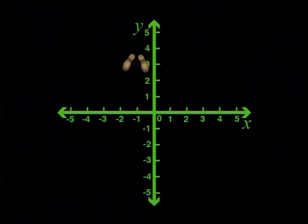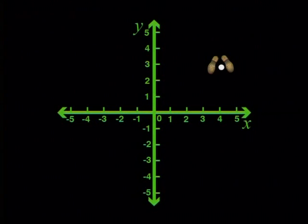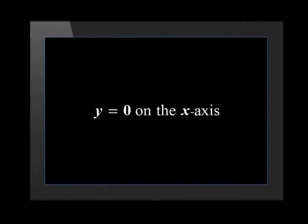That was really good! Do you think you could find a point when I give you its coordinates? I can give it a go. What are the coordinates? Let's try an interesting one. What about (4; 0)? I can see that the x is 4, so I'll have to move along the x-axis until I'm in line with 4, and then move along the y-axis until I'm in line with 0. But it hits the origin. Is that okay? Sure! And we can see that the y-value at the origin is 0. Any point on the x-axis has a y-coordinate of 0.